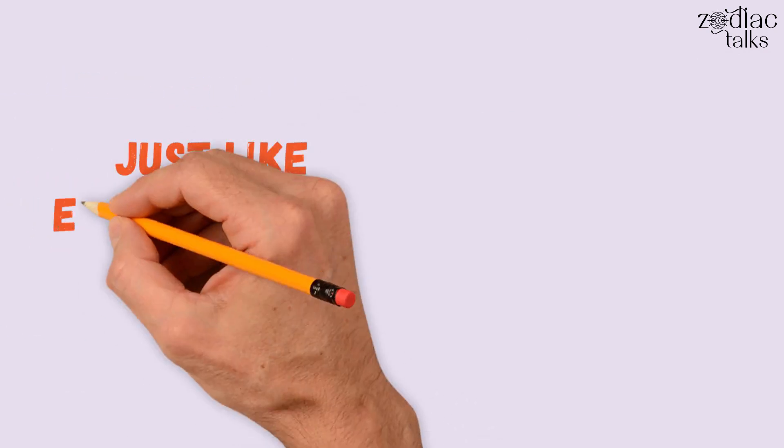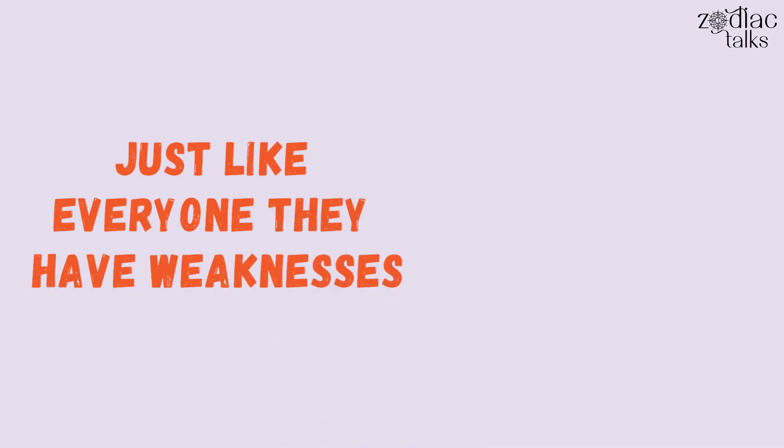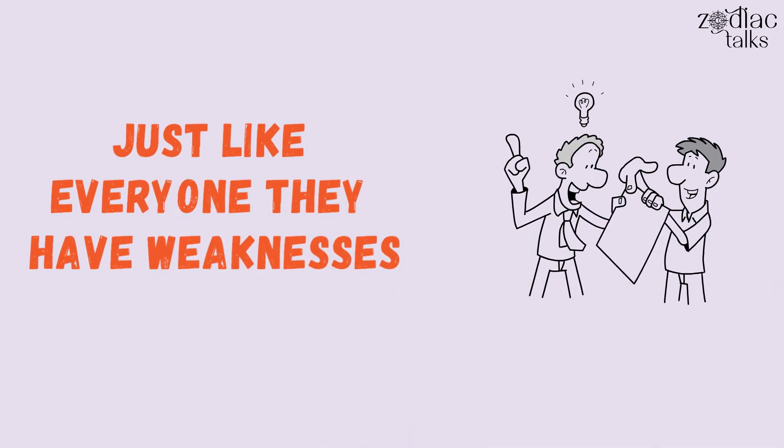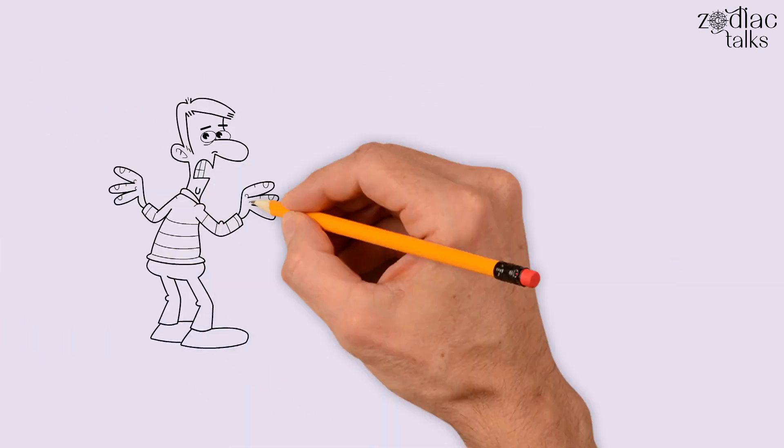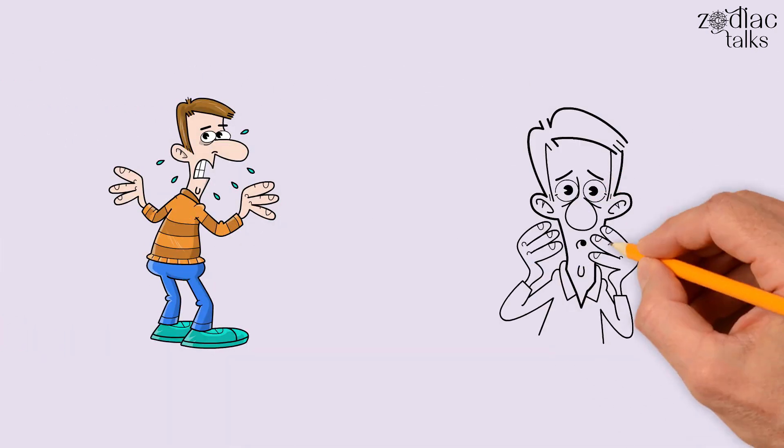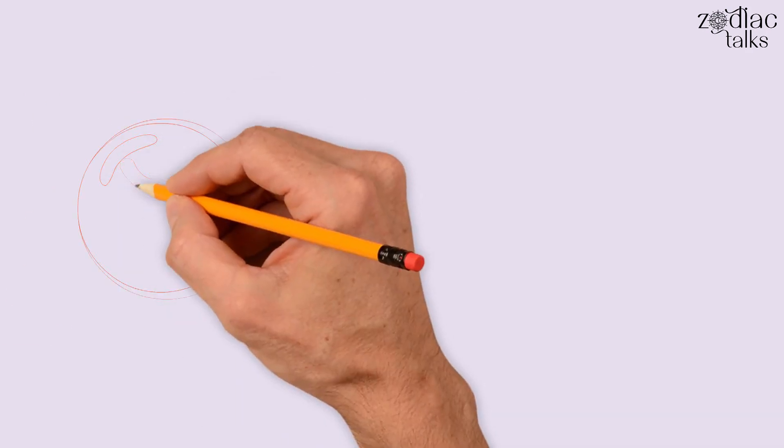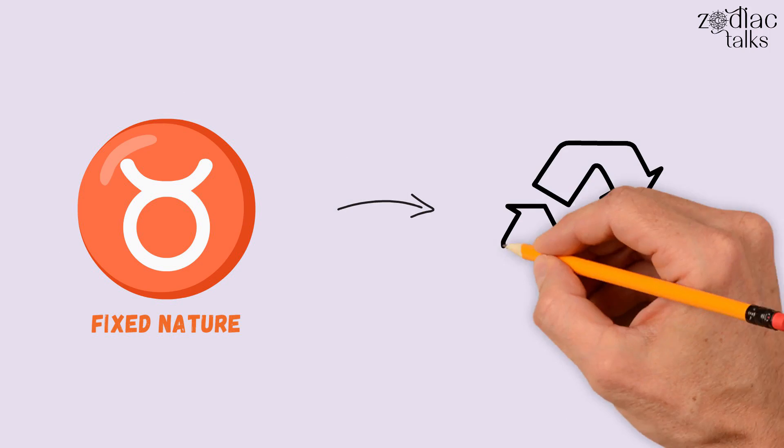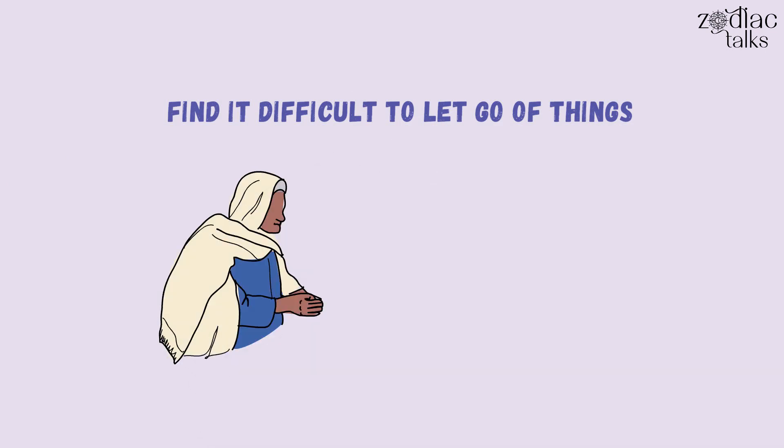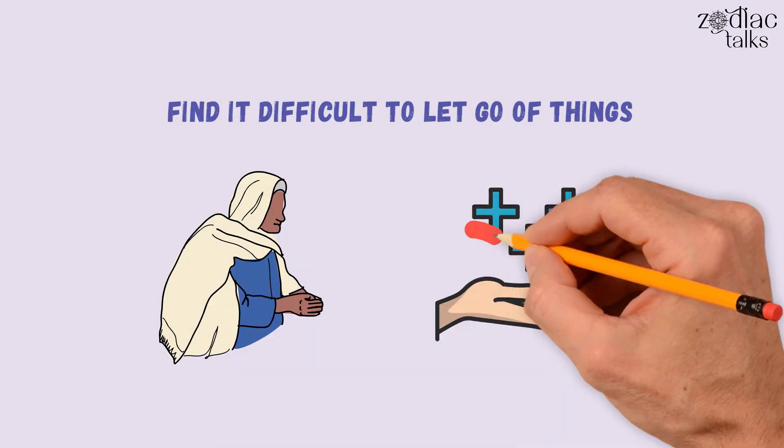However, just like everyone, they have a few weaknesses that need to be addressed in a healthy way to avoid getting caught in them for a long time. The first one is their fear of change, and the second is their fear of loss. Due to the sign's fixed nature, it becomes very hard for Taurians to adapt to changes in their surroundings or thoughts. They find it difficult to let go of things, people, or old ways of living, even if it's not benefiting them in any way.